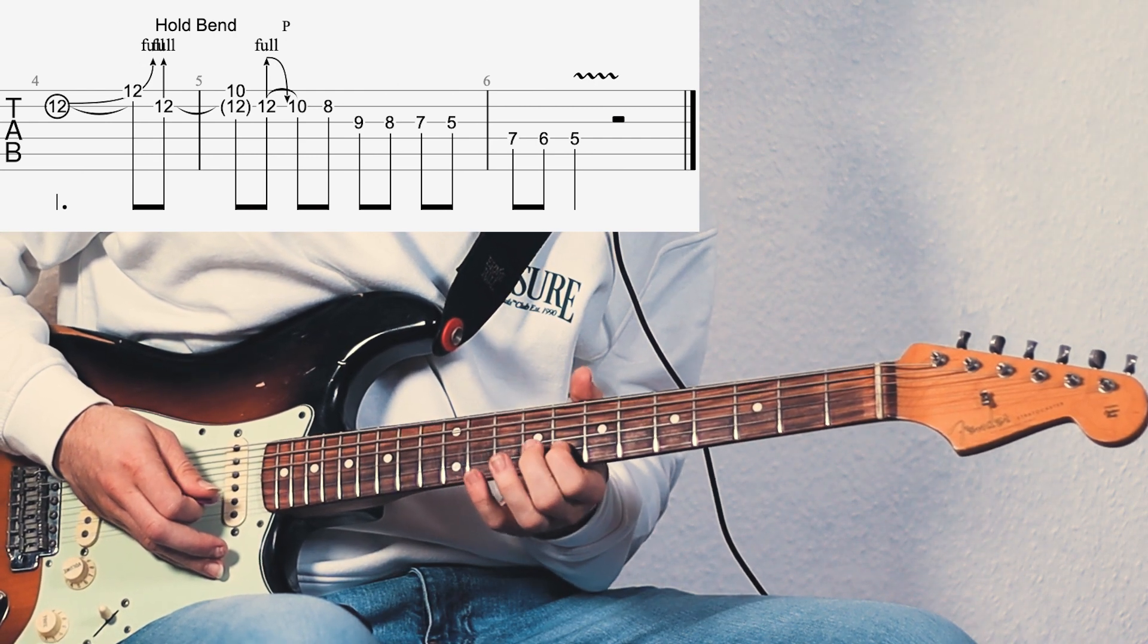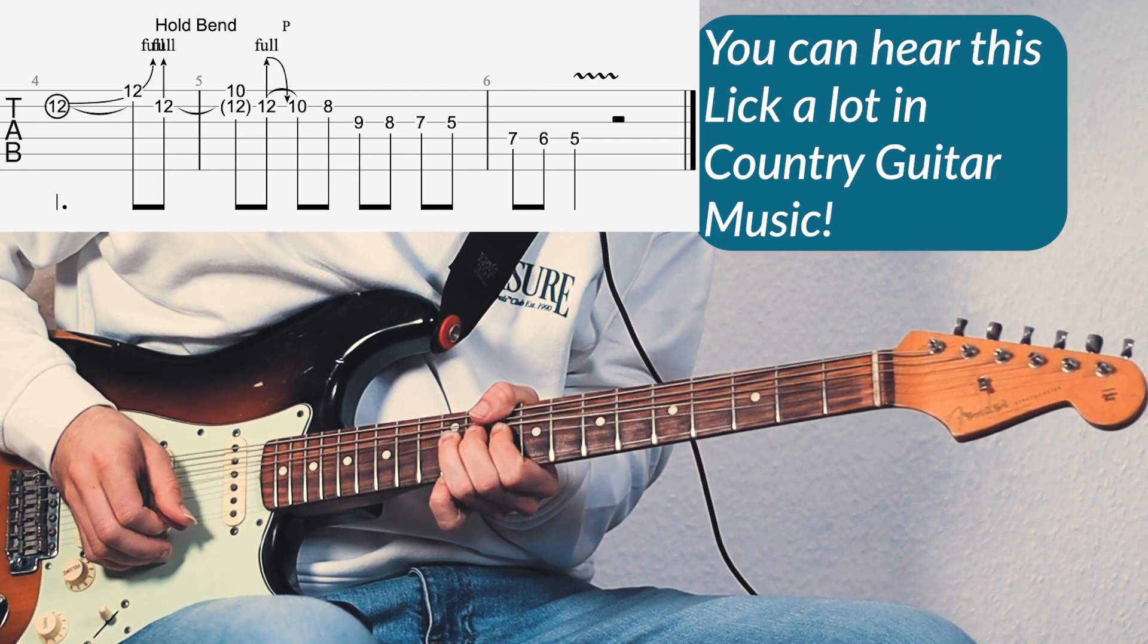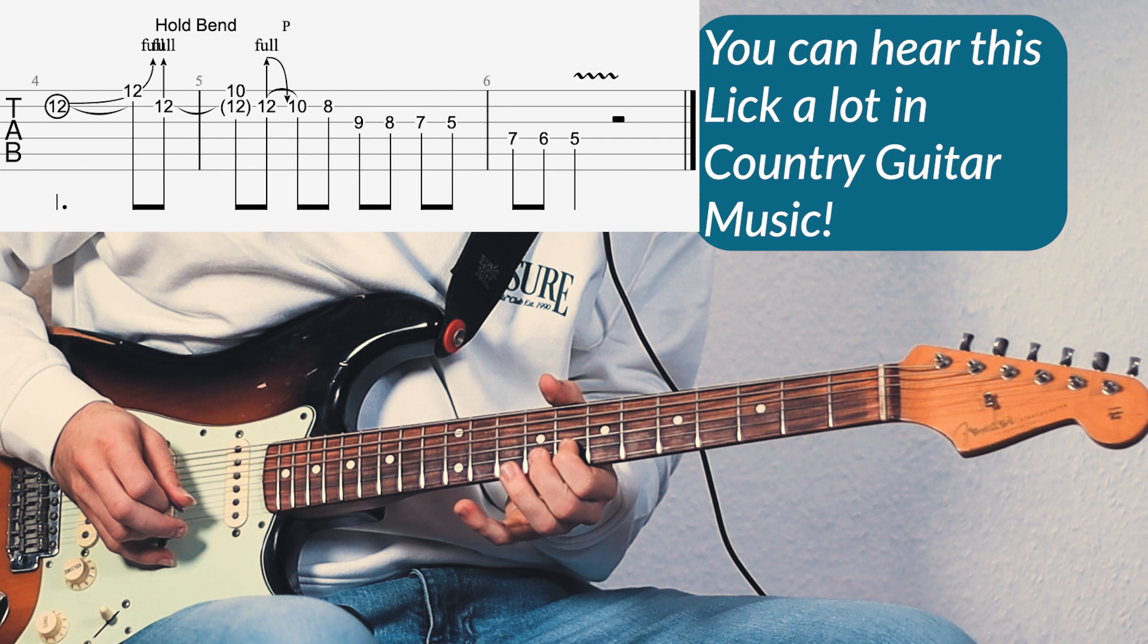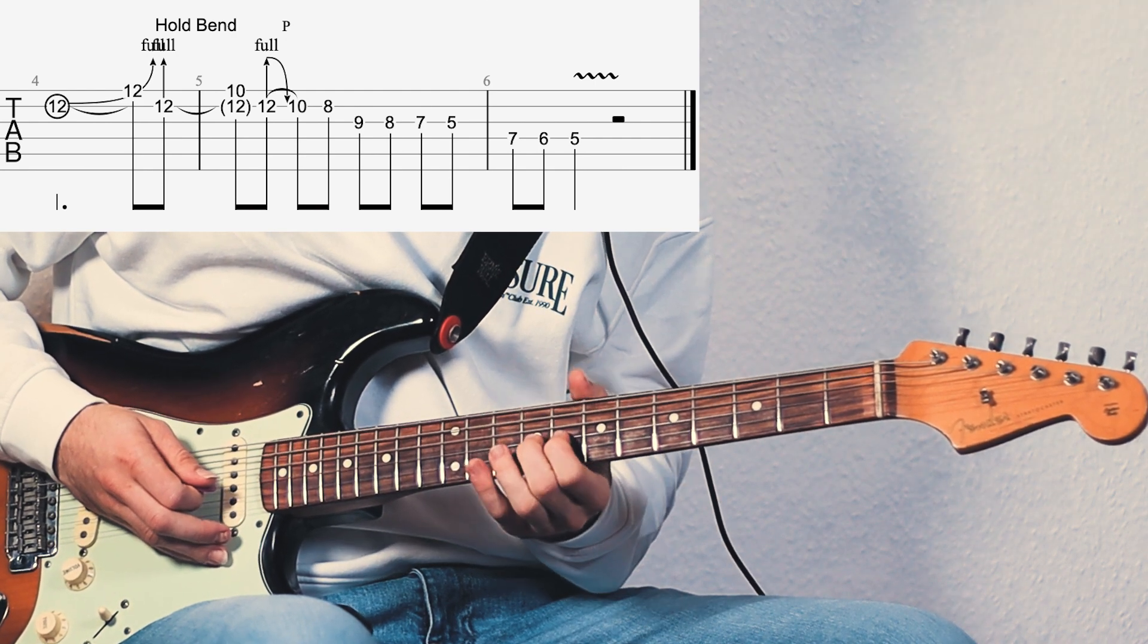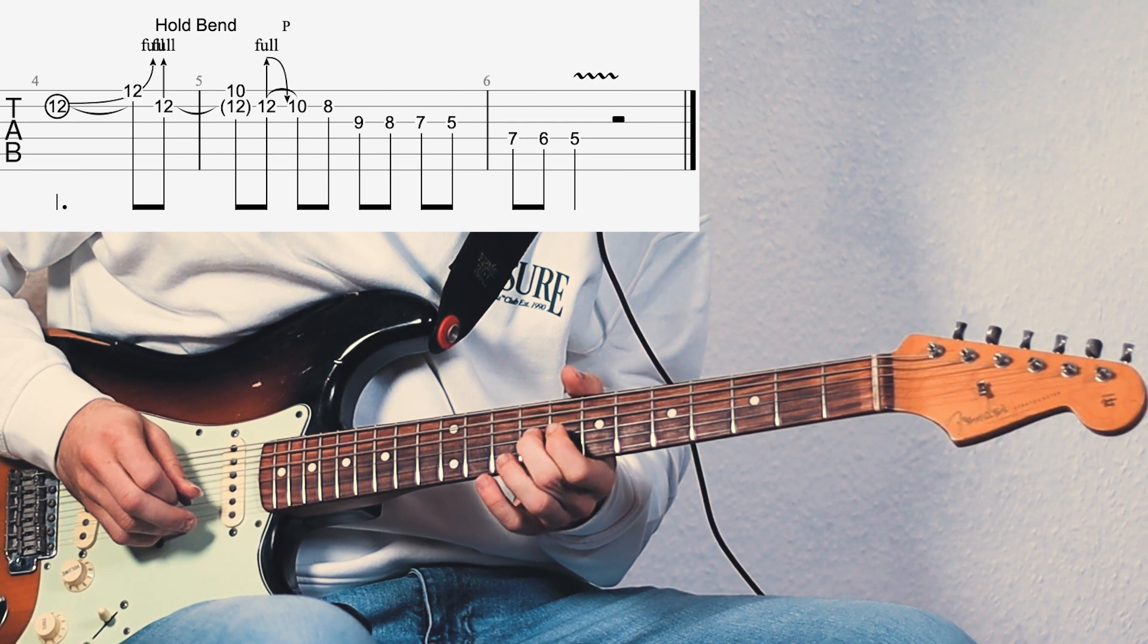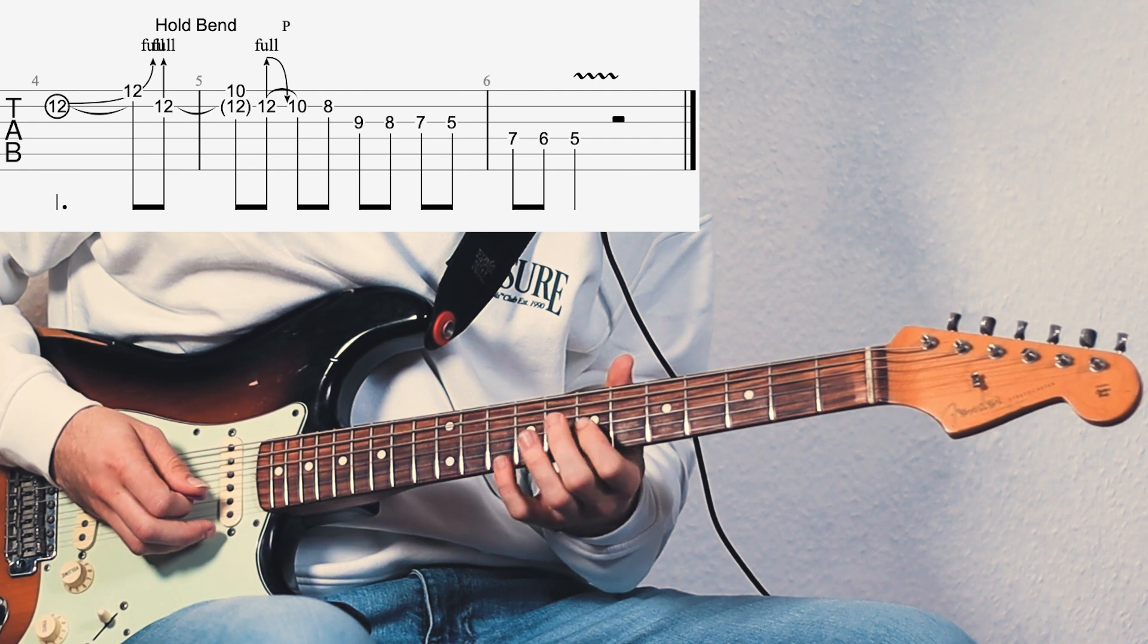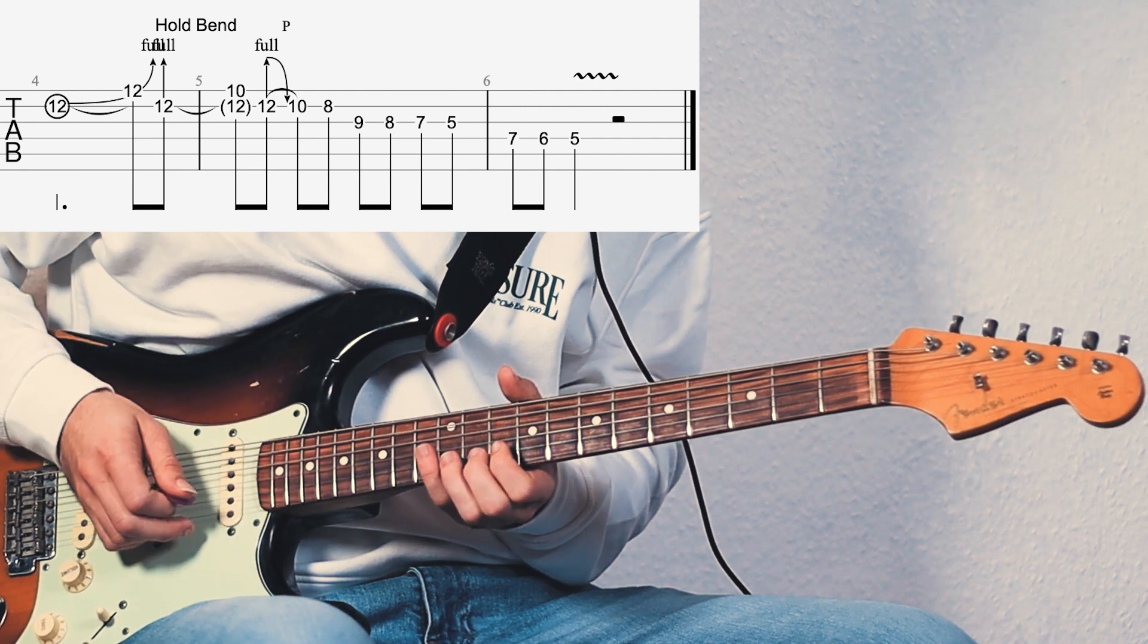Then you go to the minor 7th interval which gives that whole Mixolydian feel. When you play the 9th fret of G string, then the blue note in the key of A, and then to the 7th fret of G string, this is a cool little chromatic lick.